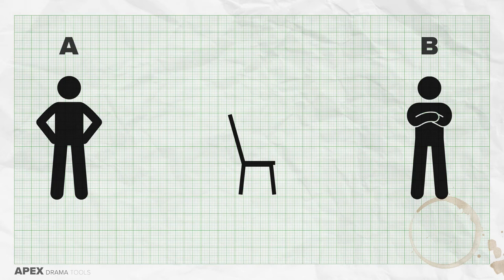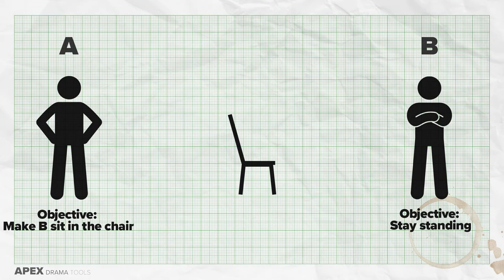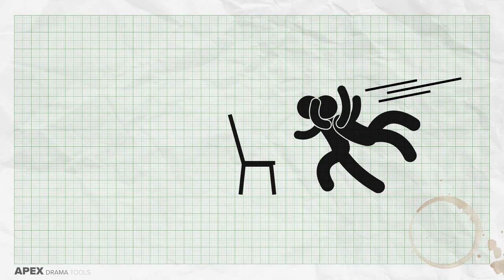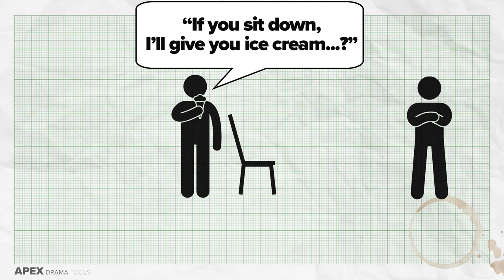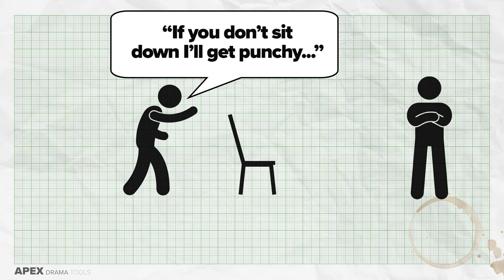Imagine another simple scenario — a basic improvisation you could play with another actor. There are two actors, A and B, and one chair. A's objective is to make B sit in the chair; B's objective is to stay standing. A can do or say anything to achieve their objective, and so can B. A might physically grab B and put them in the chair, compliment B, or bribe B with money, food, or a gift. A could also threaten or intimidate B, while B plays their own tactics to stay standing.